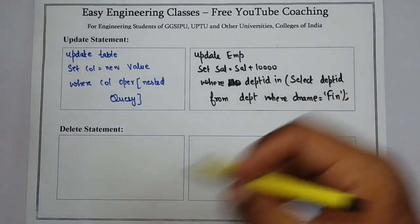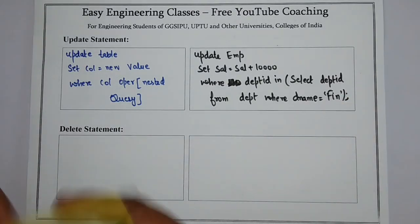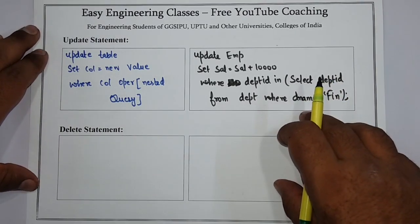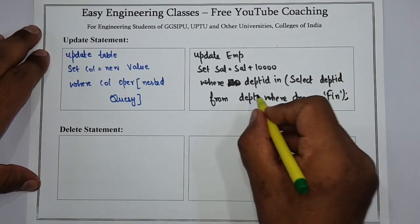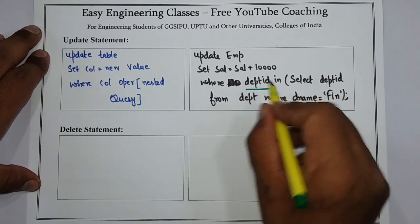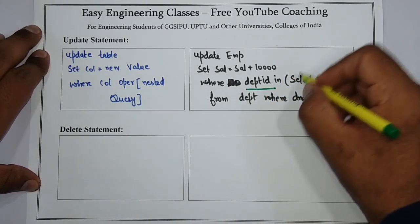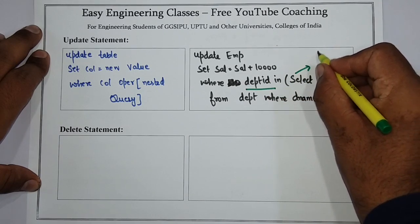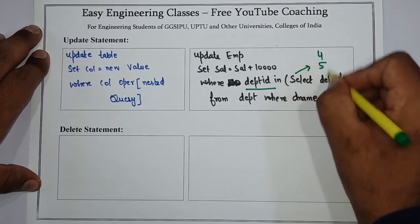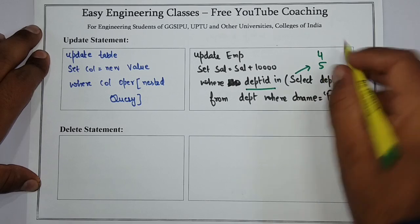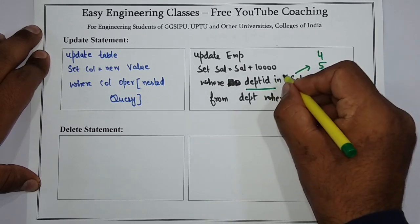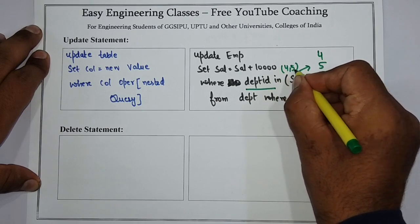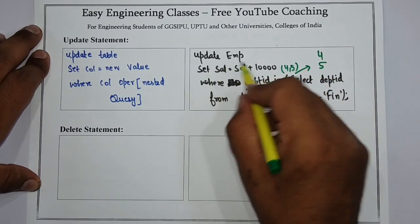What will happen is the query will update the salary of all employees whose department ID is in the result of the nested query. Suppose the finance department IDs are four and five, so department_id IN (4, 5) — it will update the salary for those employees.